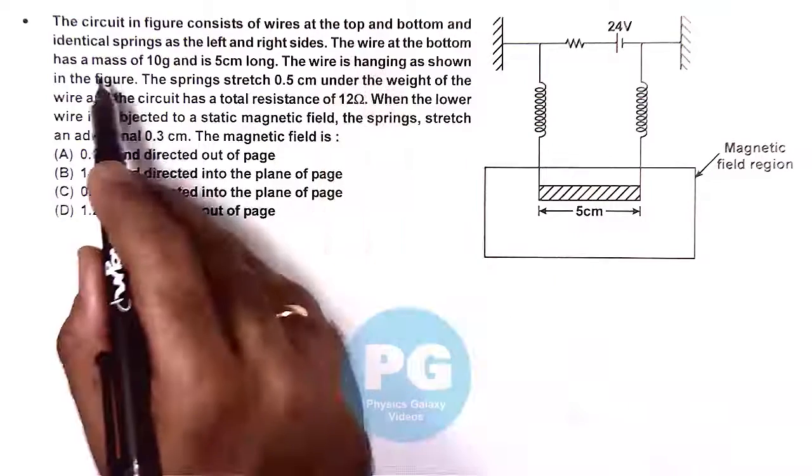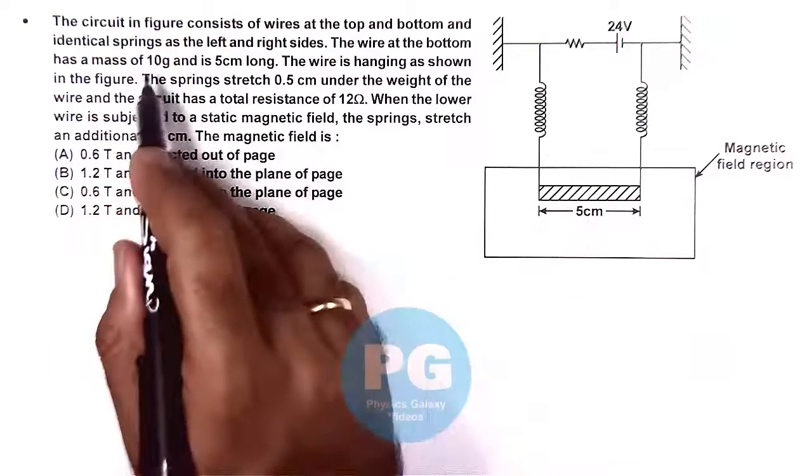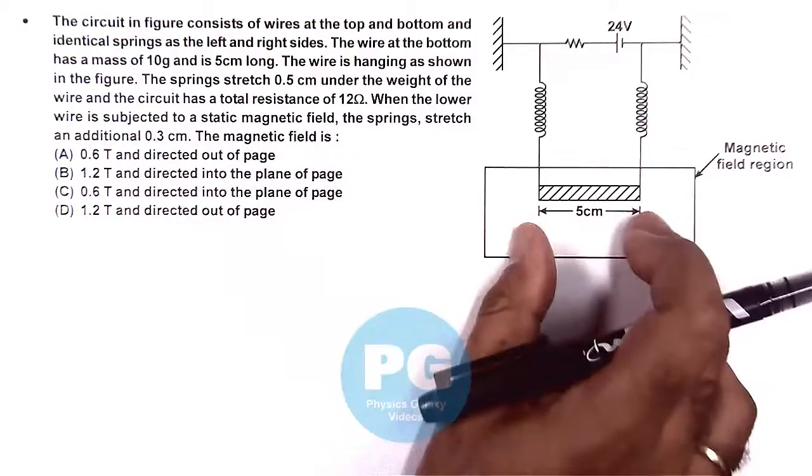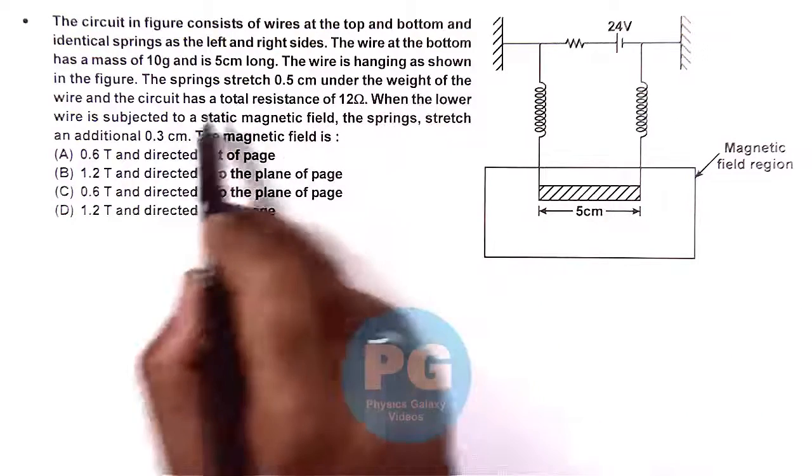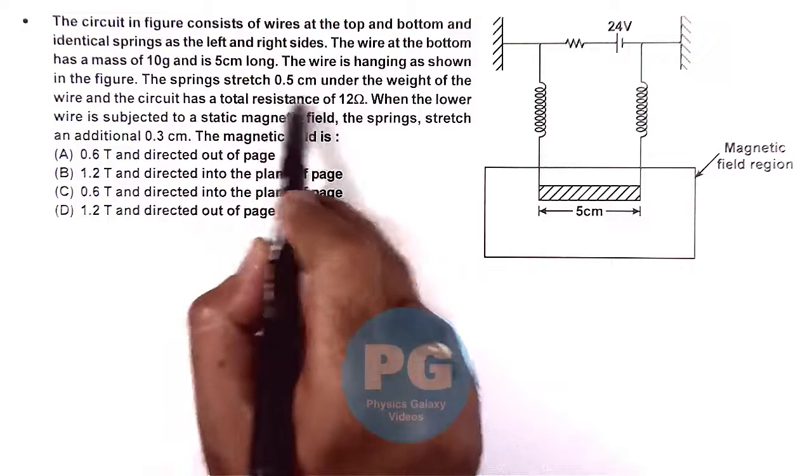The wire at the bottom has a mass of 10 grams and its length is 5 centimeters. It is saying the wire is hanging as shown and the springs stretch 0.5 centimeters under the weight of this wire.